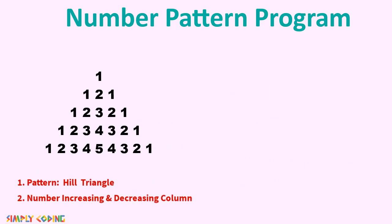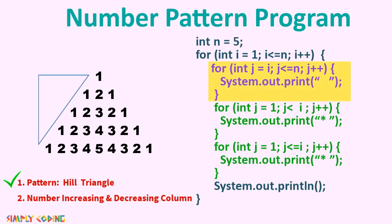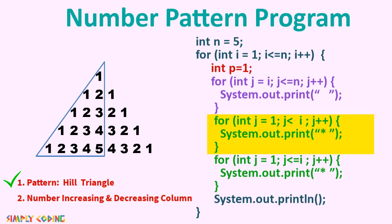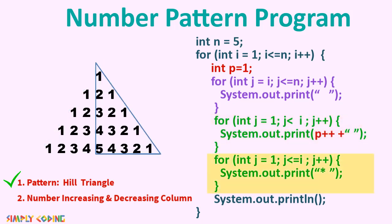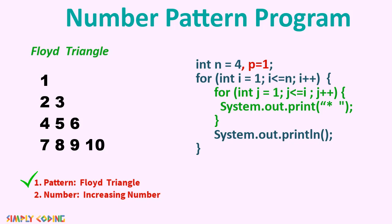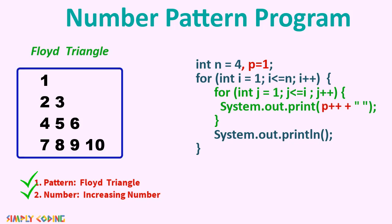What if the pattern is a hill with increasing column numbers for the first triangle and decreasing for the second? We take our standard hill pattern star code. After printing spaces, the first triangle increments columns, so we initialize p to 1 and print p++. In the next loop we are just decrementing the same p, so we do p--. This gets us the required pattern. Let's also look at Floyd's triangle, which is slightly different — there is no row or column pattern, but the number itself increments every time. We initialize a variable outside all loops and increment it every time we print. For 4 rows this gives us the classic Floyd's triangle output.